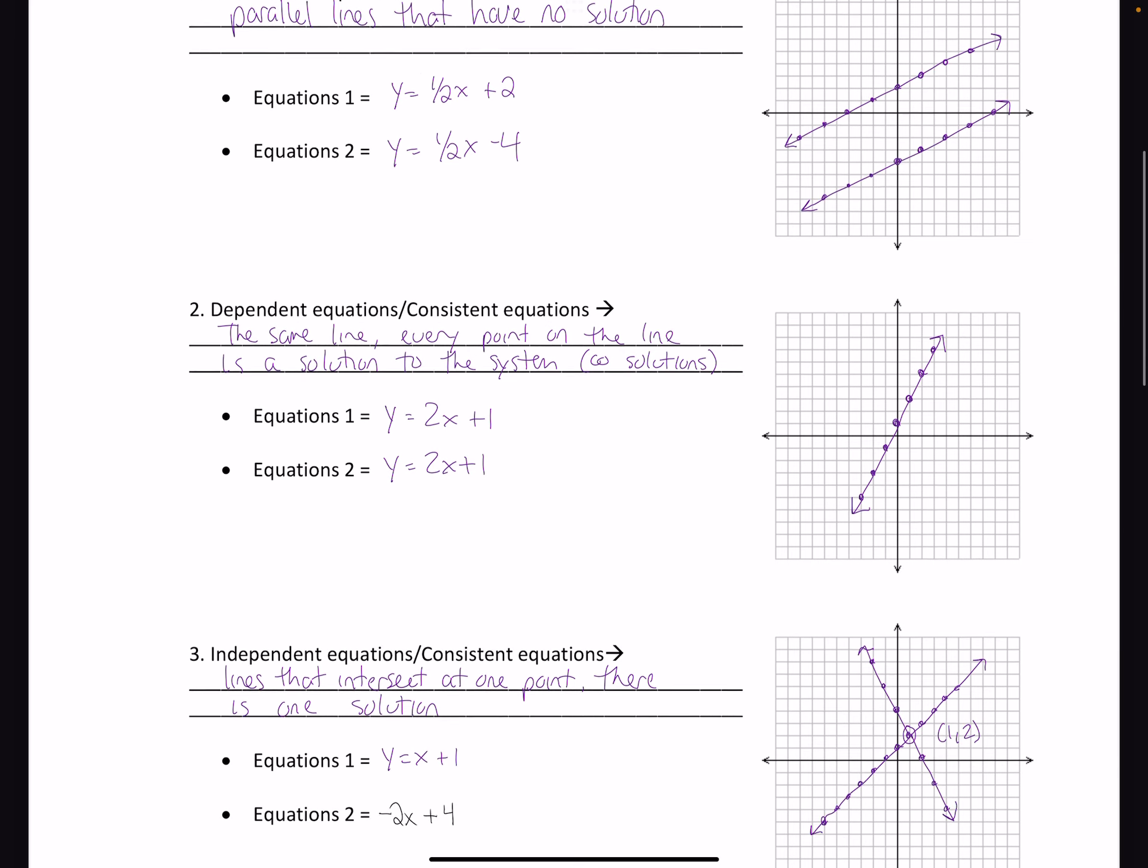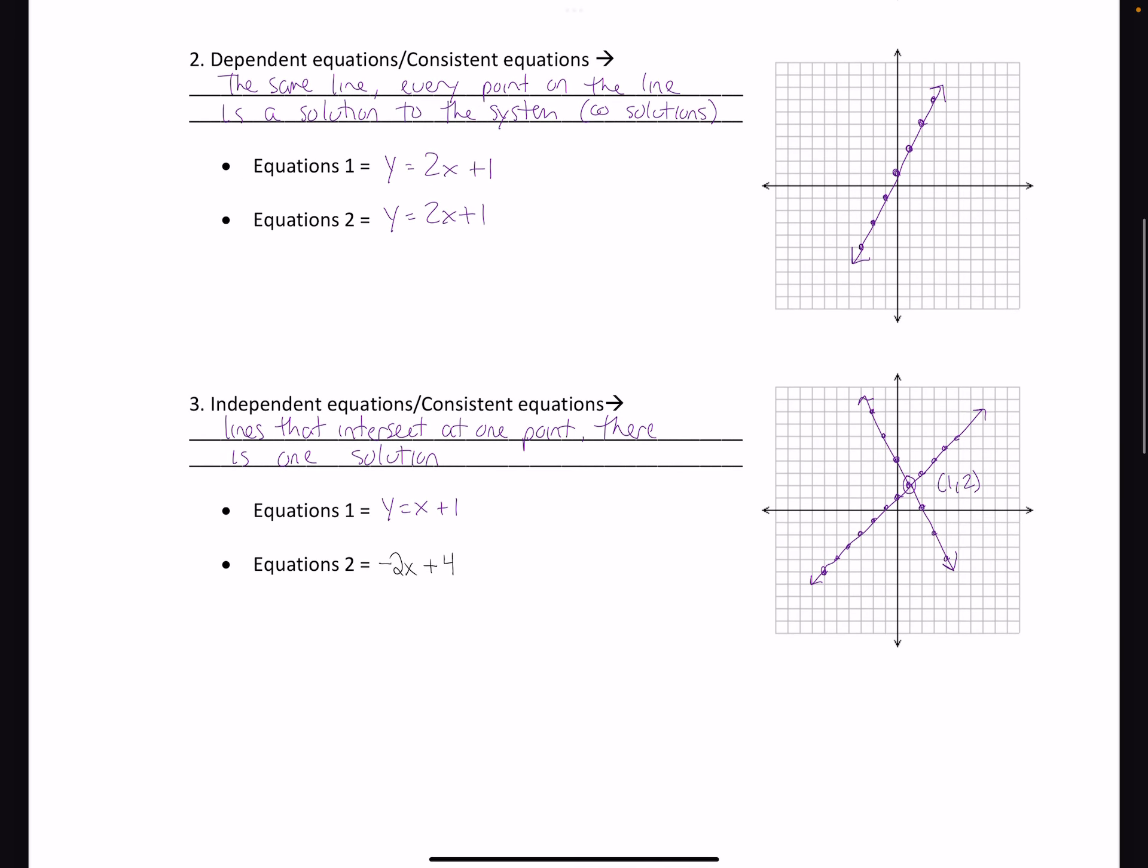The last one, the more common one that we get, our consistent independent system, is where we have two lines that cross. These two lines, they cross, they give us a one point answer.